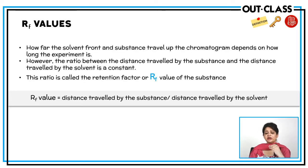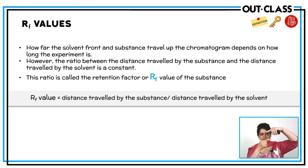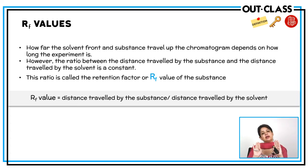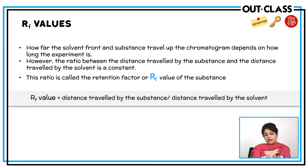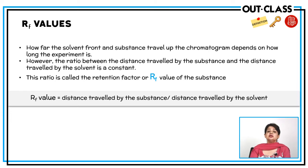How far the solvent front and the substance travel depends on how long the experiment is run. However, the ratio of the distance travelled by the substance over the distance travelled by the solvent will remain constant, no matter how long the experiment runs. The RF value of a substance — the retention factor or relative flow — is constant. RF value equals the distance travelled by the substance over the total distance travelled by the solvent.